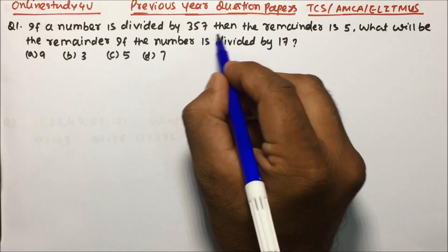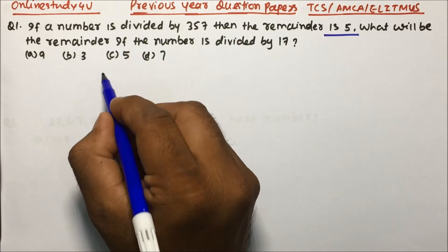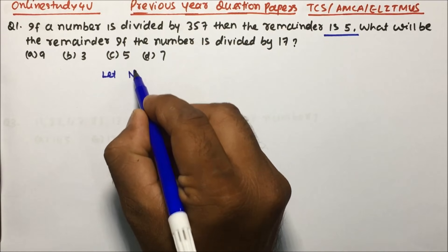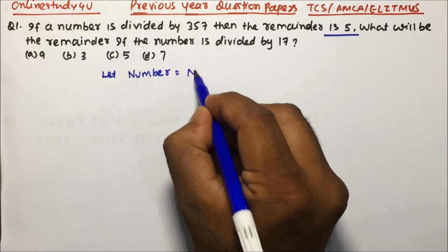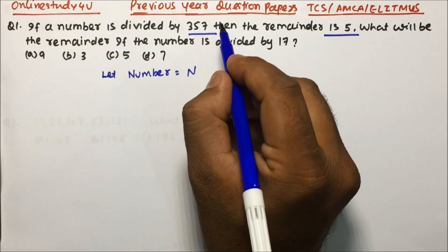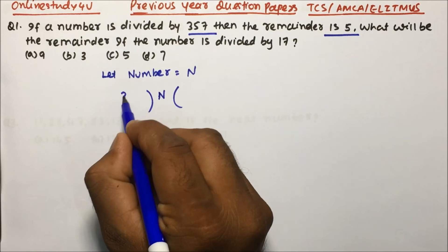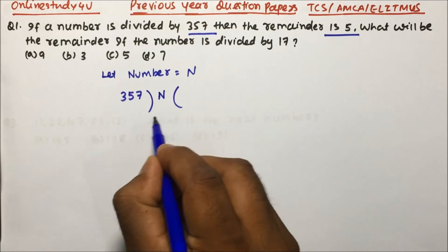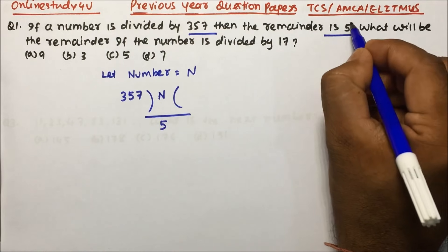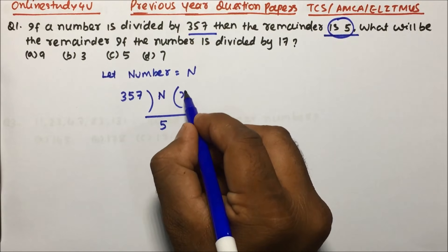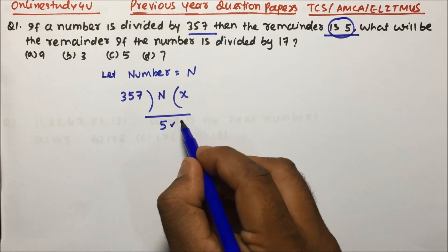If a number is divided by 357, the remainder is five. Let's assume the number is n. So if you are dividing n by 357, x times, then the remainder is five.